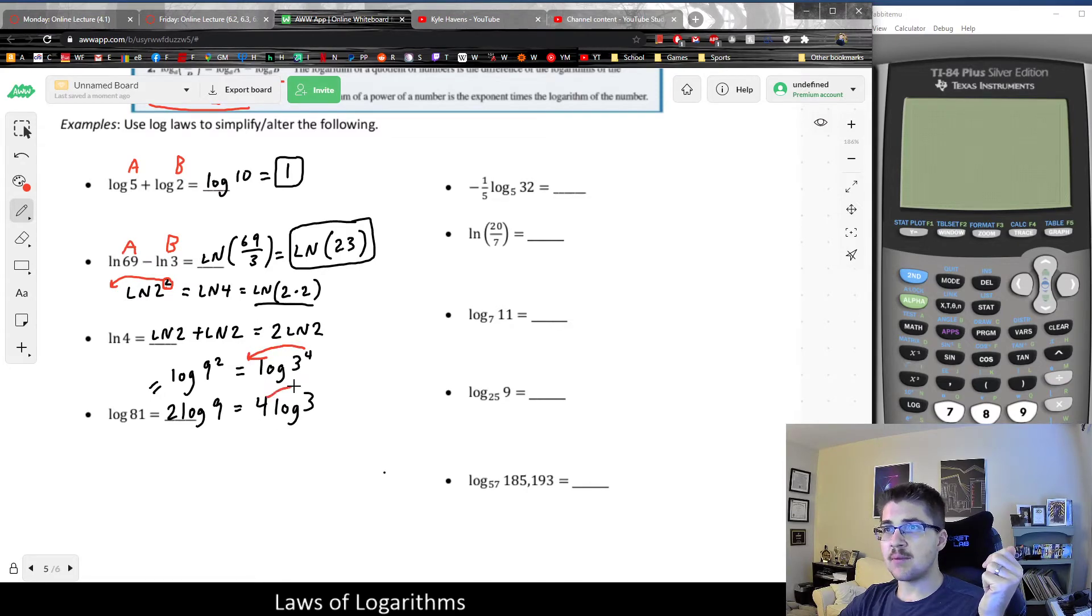You could also take the number out front and bring it back in, because logarithm laws can be applied in either order since they're both equivalent. For example, in this bullet point, negative one-fifth multiplied by log base 5 of 32, if I have a number out front, that could always be moved into the logarithm as an exponent on the 32.